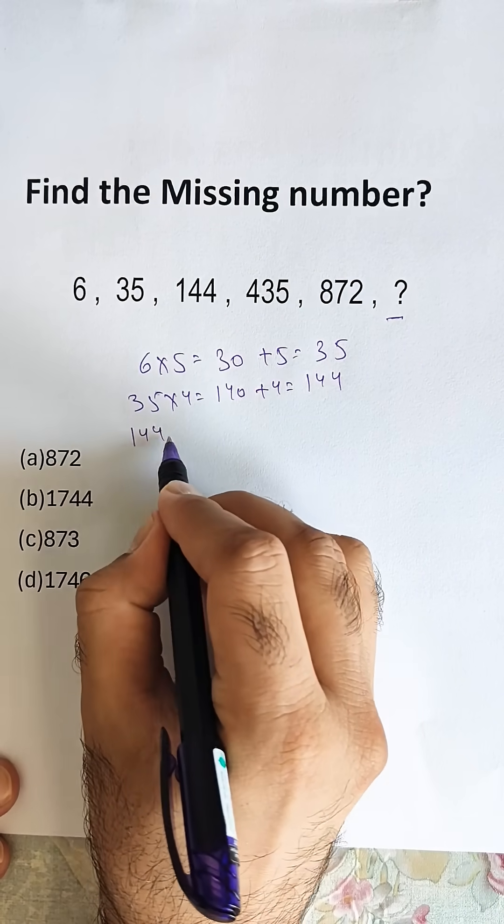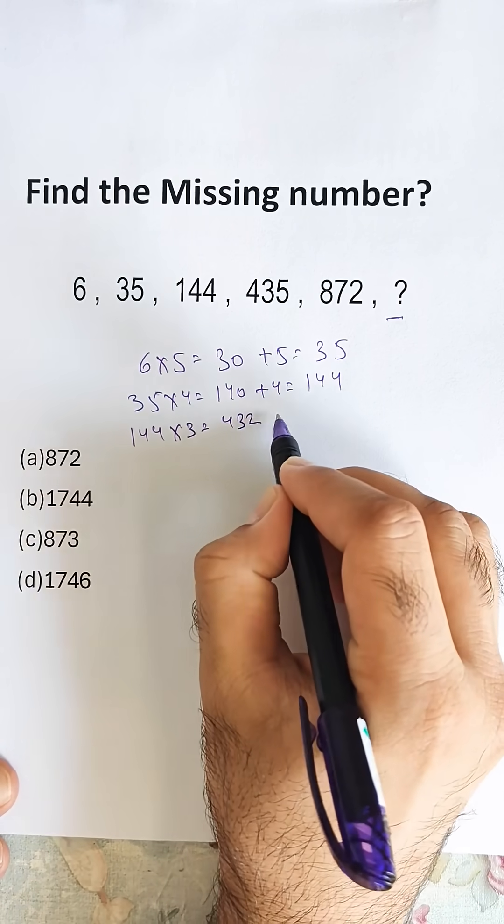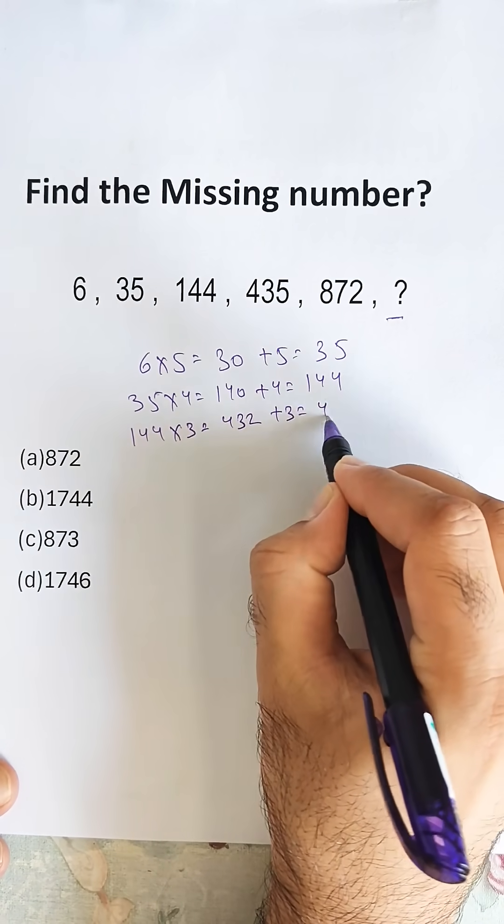Next will be 144 into 3, that is 432, and adding 3 we get 435.